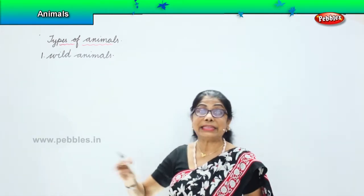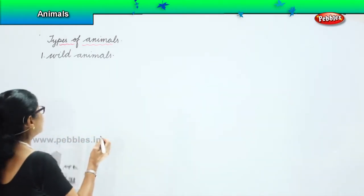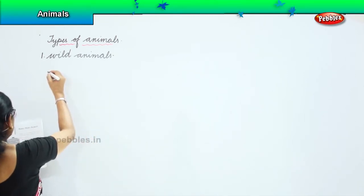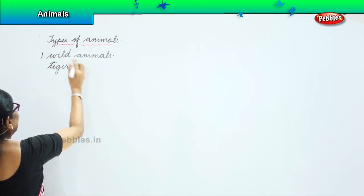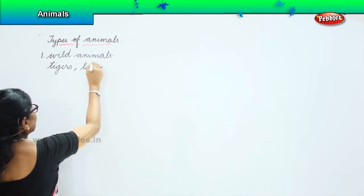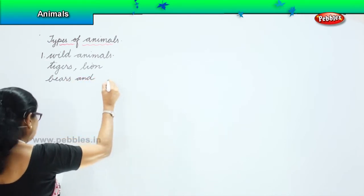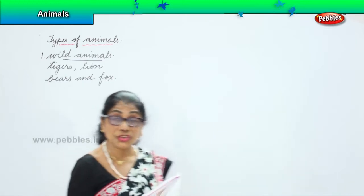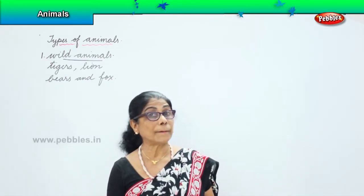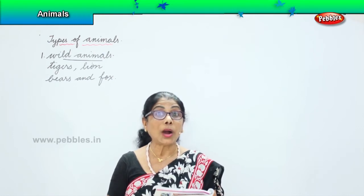Dangerous animals cannot live with us because they might kill us. Examples of wild animals are tiger, lion, bear, and fox. So wild animals are animals that live in the jungle. They are dangerous and ferocious. They move from place to place freely and kill tiny animals for food.